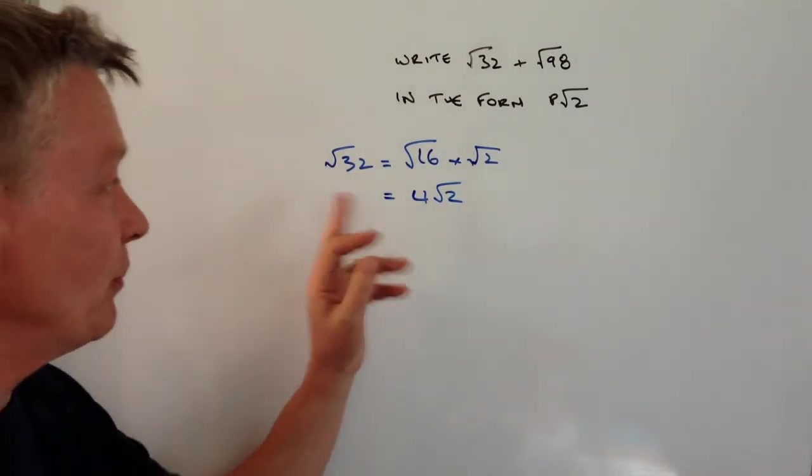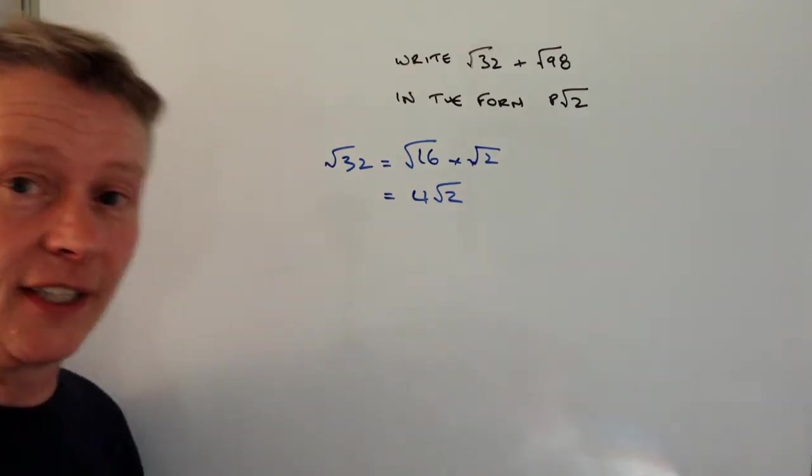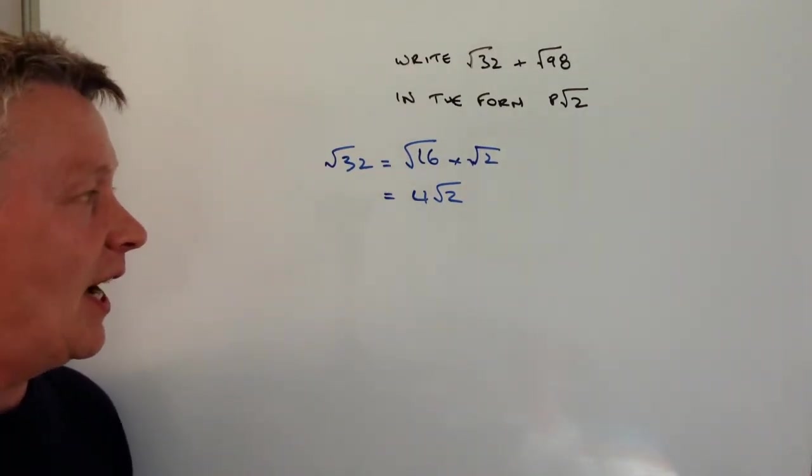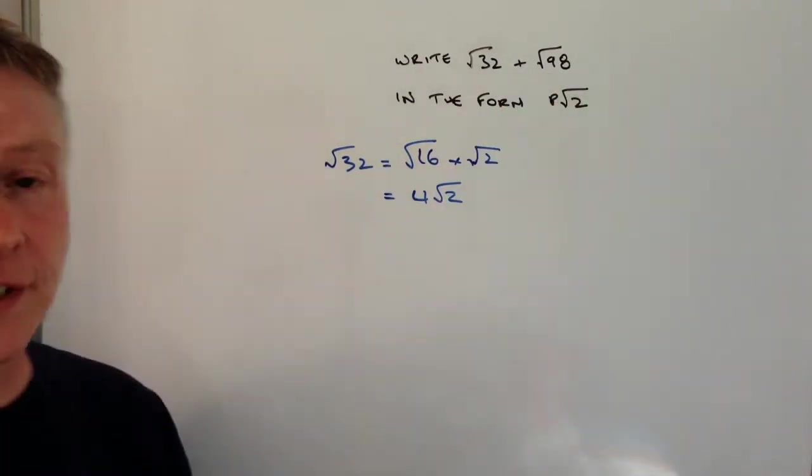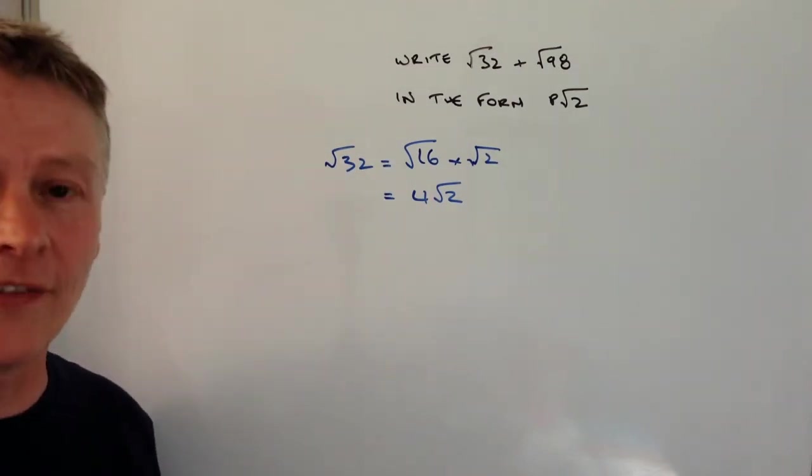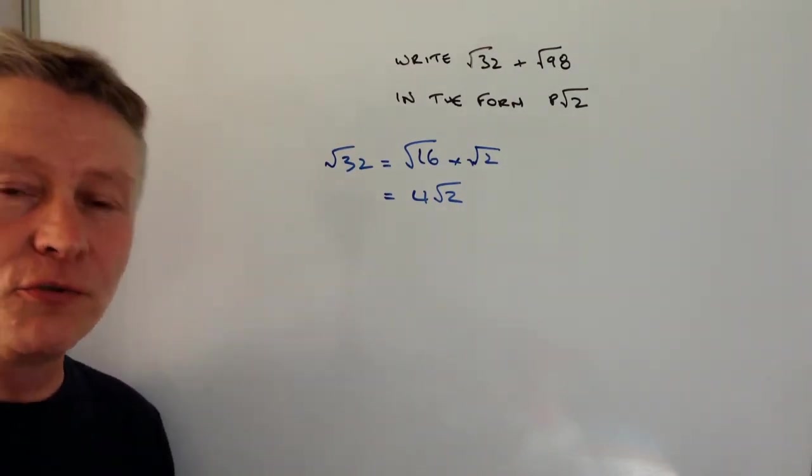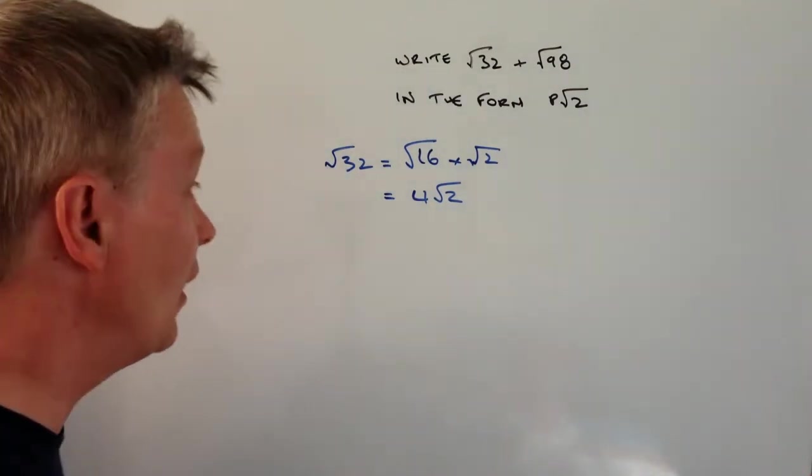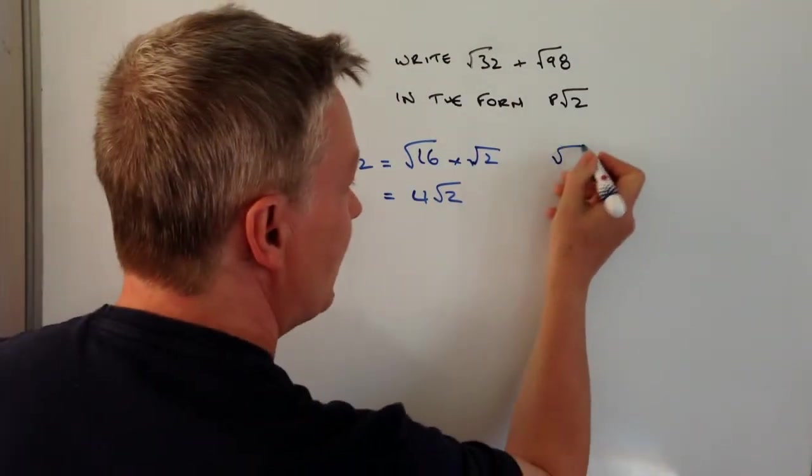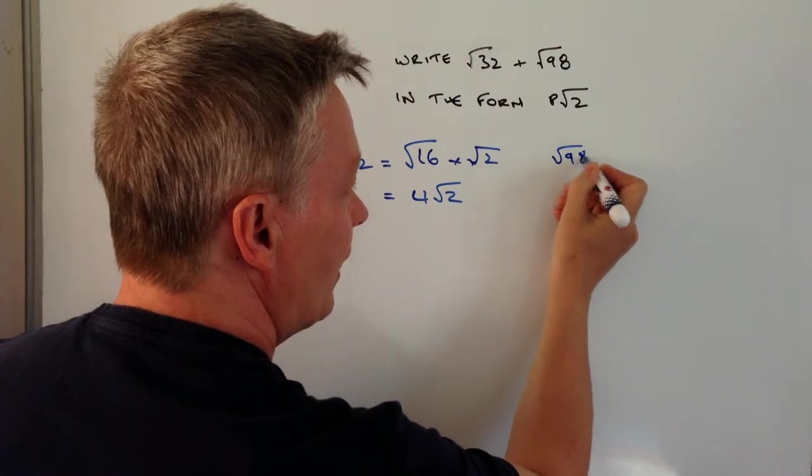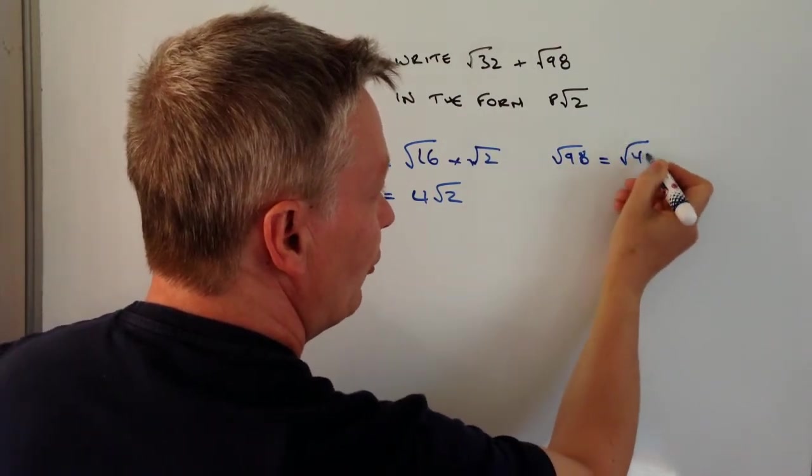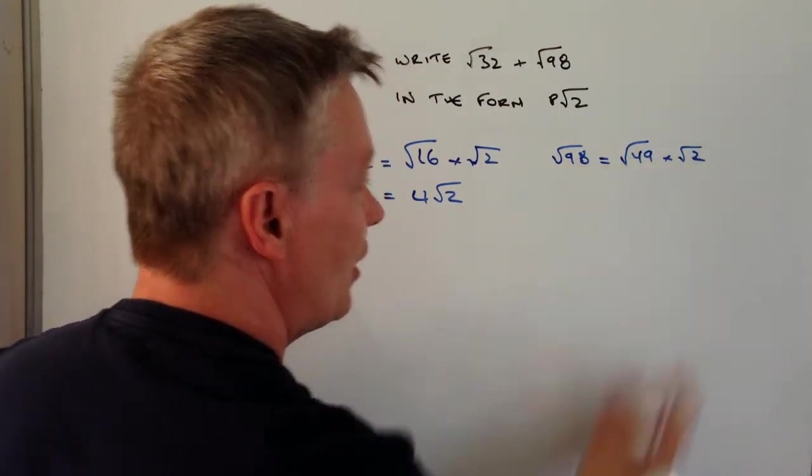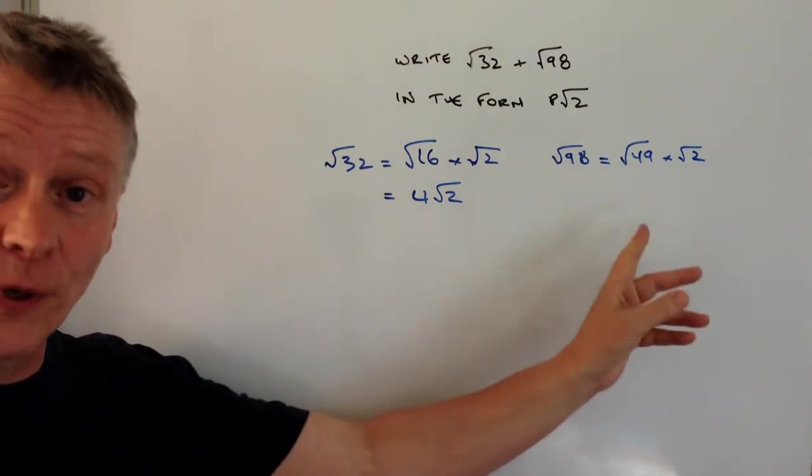So that should be okay for you if you've had a little bit of time with surds, and it's exactly the same with 98 - you need to be aware that you need to create two numbers multiplied together, one of which is a square number. Well, root 98 happens to be equal to root 49 times root 2, and 49 is a square number.